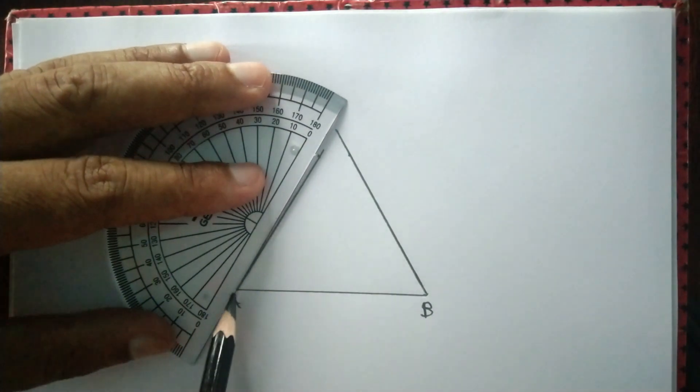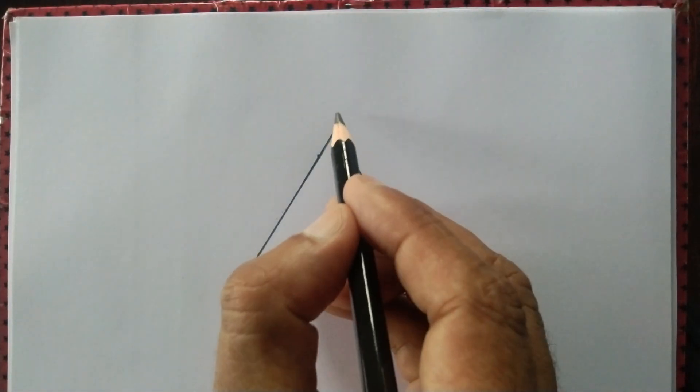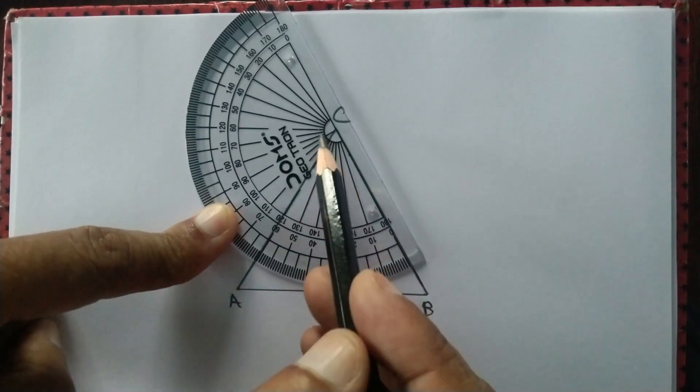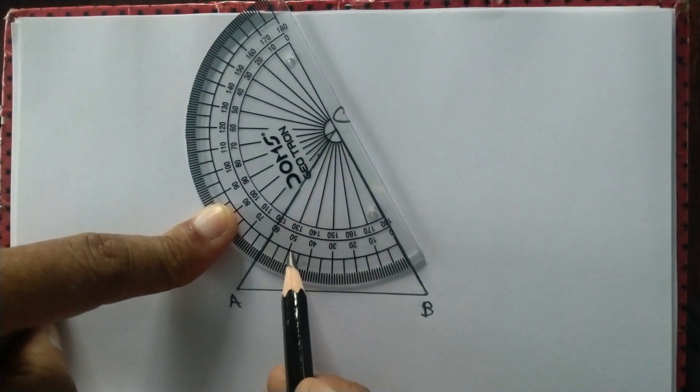We extend the arm of angle A and we get triangle ABC. You can check for confirmation that angle C measures 60 degrees as well.